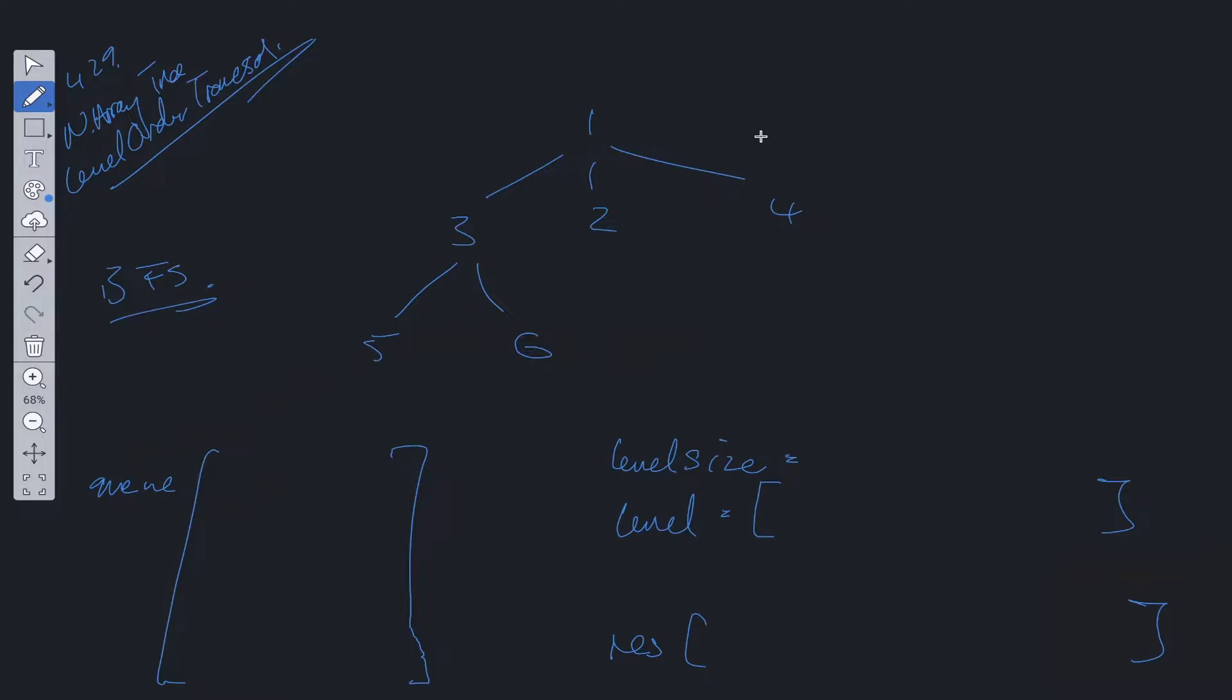We always initialize the queue with the root when doing a level order traversal, so we can add that in here. This is a reference node to the root. The level size is going to be equal to the current queue length, so we can add one into that. So we can start the BFS.